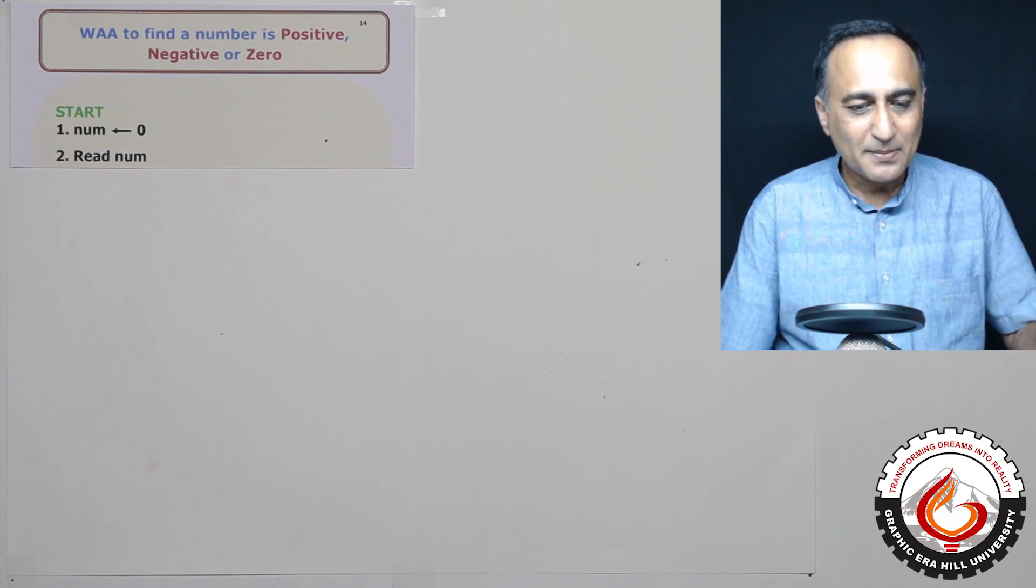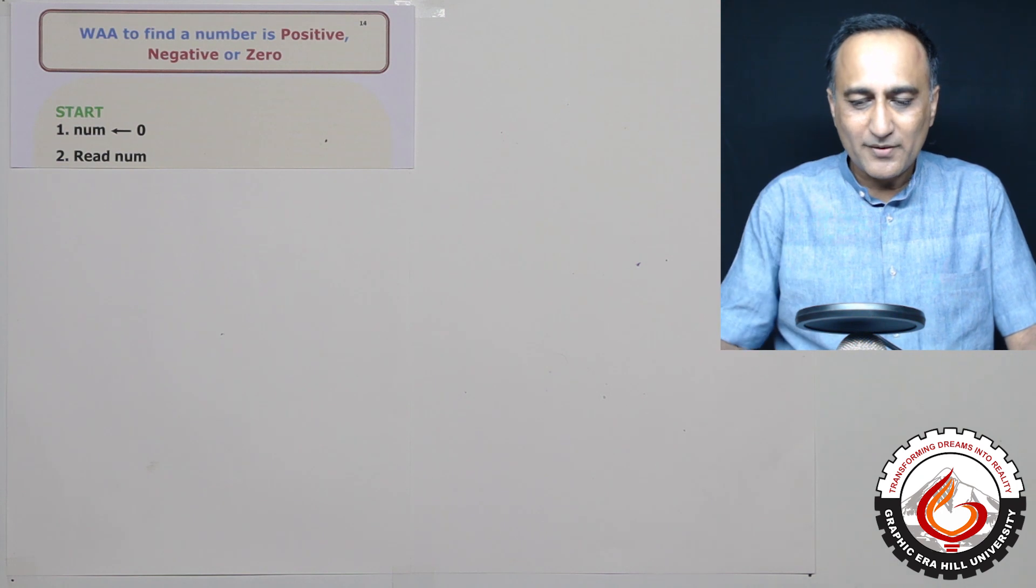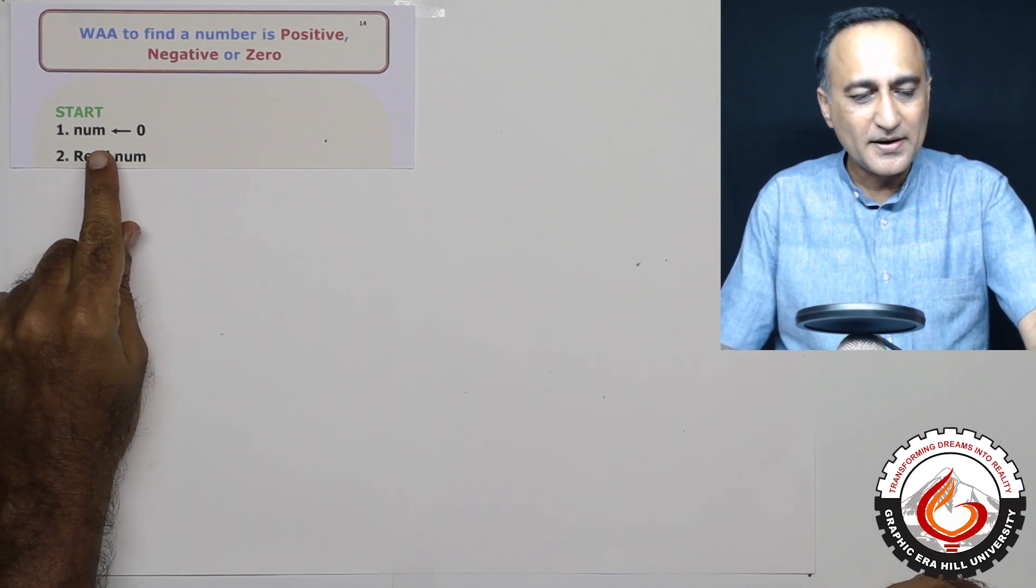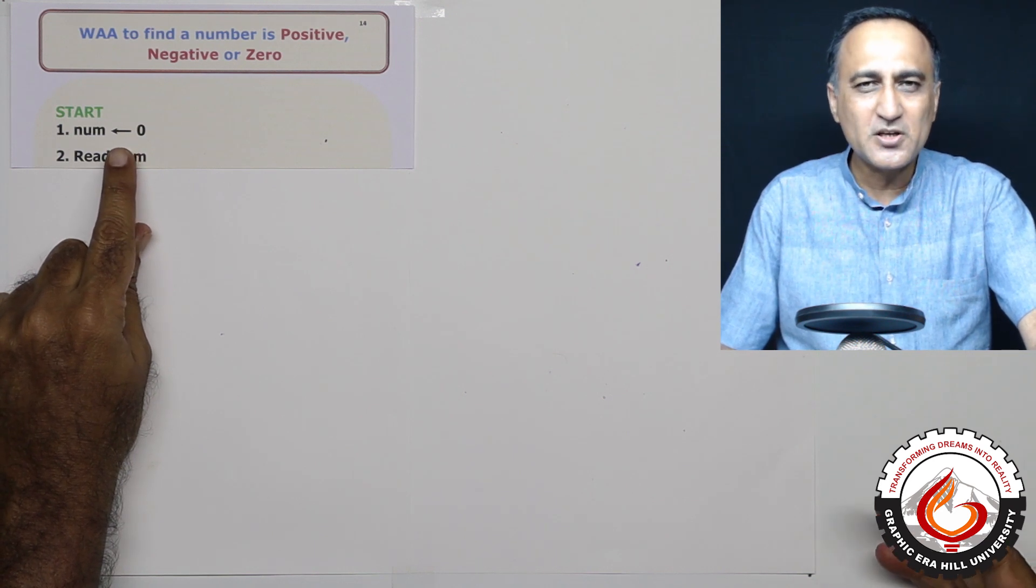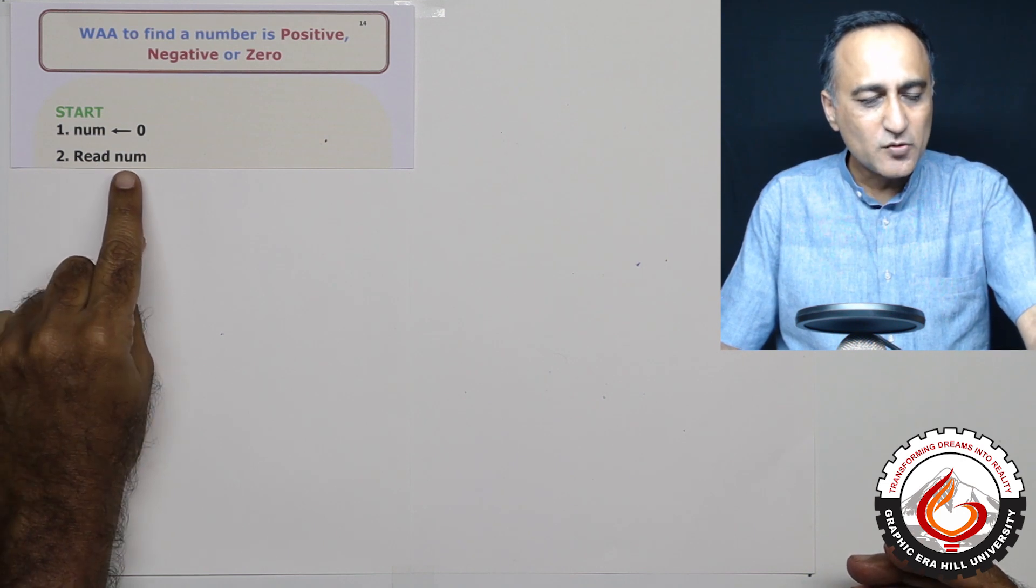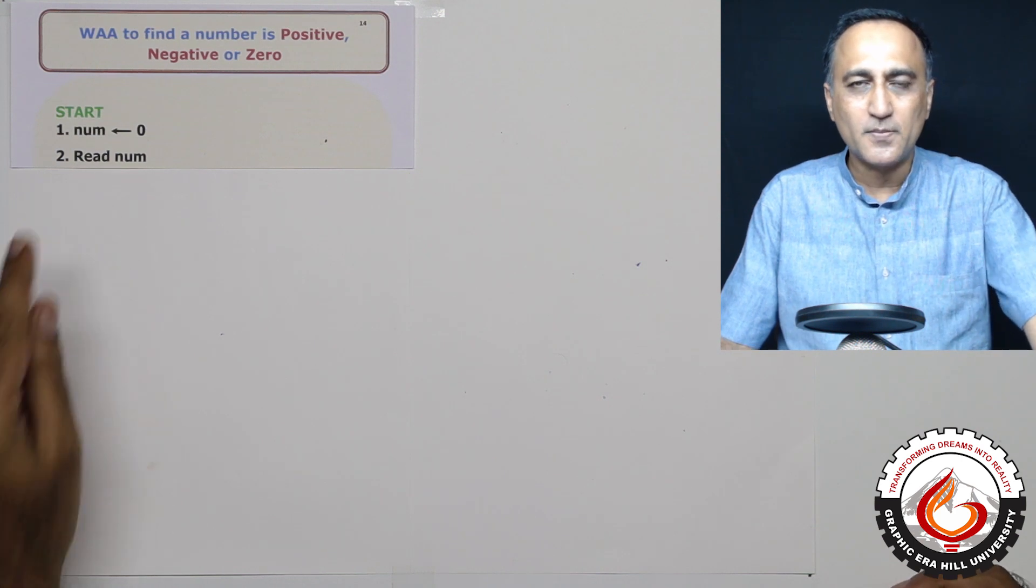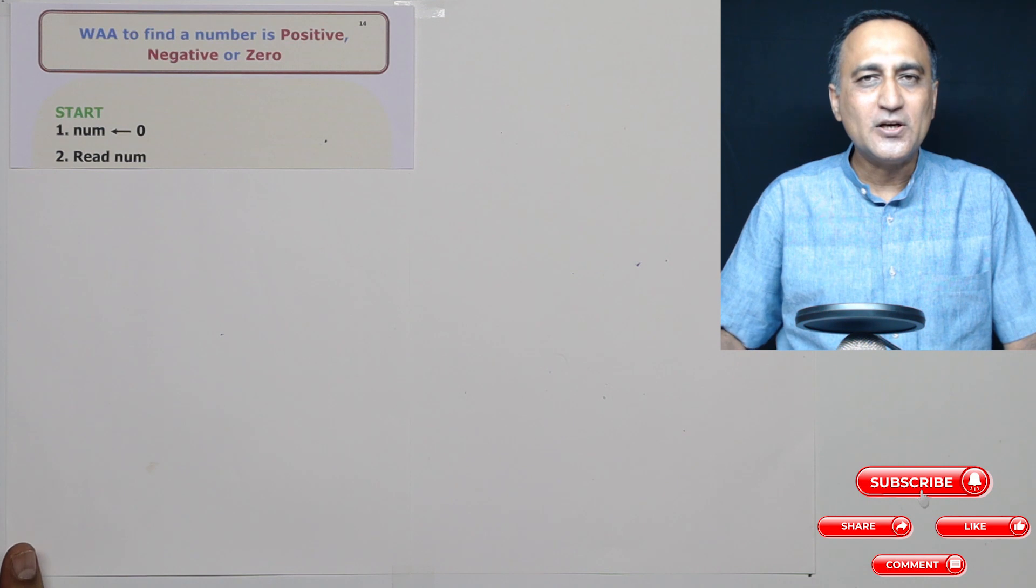Here a number has three possibilities: positive, negative or zero. So the first step what I will do is I will declare a memory location and I will call it number with the initial value zero. Even if I don't give any value initially doesn't really matter, then I am going to ask the user to enter a number. So I'm going to read a number from the keyboard. Once I read a number, I am going to do the following.